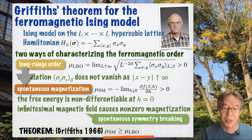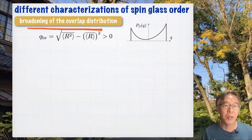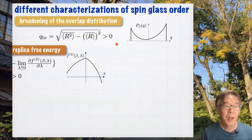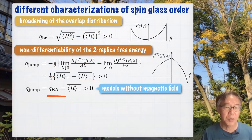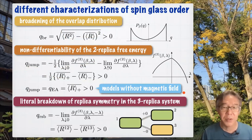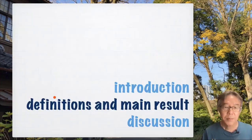Today we are going to discuss its extension to spin glass models. We will study three different characterizations of spin glass order. The first is in terms of the broadening of the overlap distribution. The second is in terms of non-differentiability of the two-replica free energy; the Q-jump order parameter is identical to the Edwards-Anderson order parameter when there is no magnetic field. The third characterization is in terms of the literal breakdown of replica symmetry.